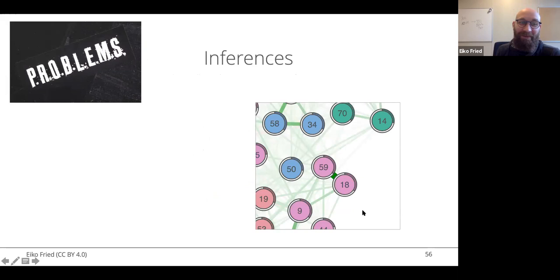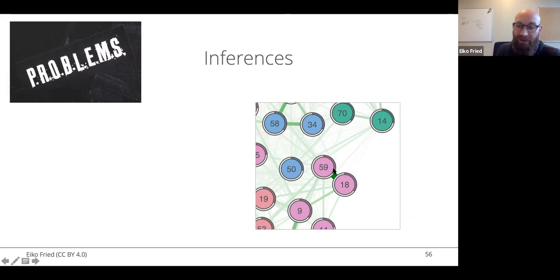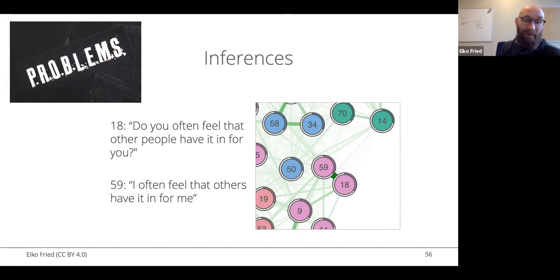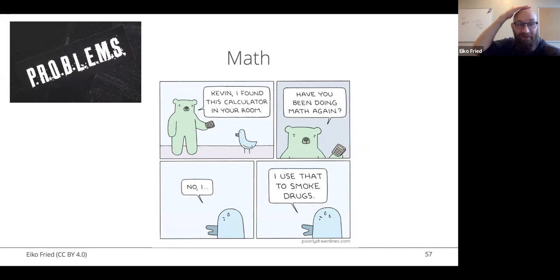Here's an example from my own work with a dataset of 27,000 people on schizotypal personality traits. After fitting the network model, I looked at the items, and the strongest edge was between 'I often feel other people have it in for me' and 'I often feel others have it in for me' — essentially the same item twice. This gives us no information about a causal skeleton; it just tells us we measured the same thing twice. Network models are mostly regressions, and all the problems of regressions apply.